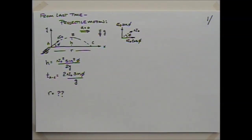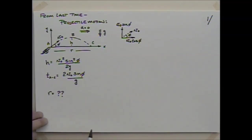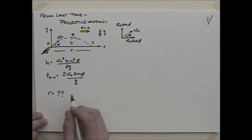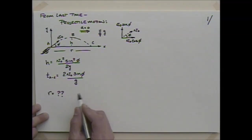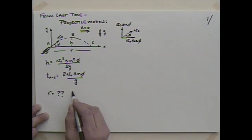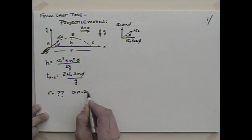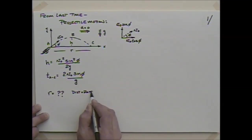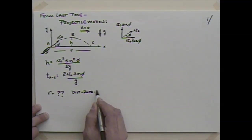Neglecting air drag is not a great approximation for a feather, but for a relatively low-speed cannonball it's pretty good. It certainly makes our math easier. If we start looking at drag, we have to use fluid models and differential equations. So we'll take the acceleration in the horizontal direction as zero.